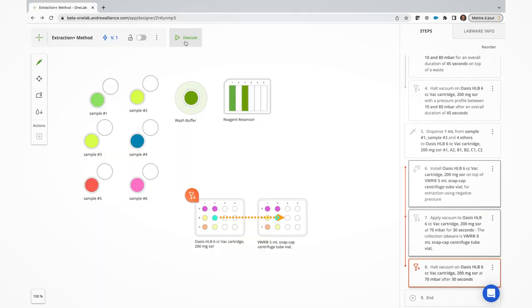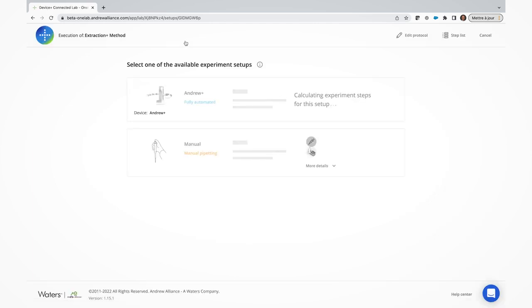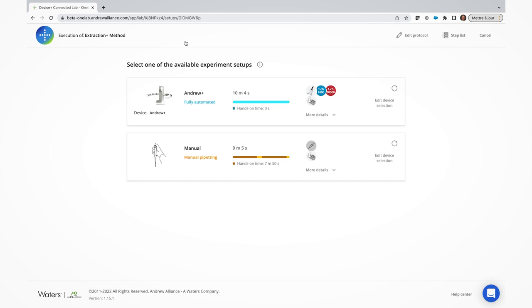Once your protocol is built, click on Execute and OneLab will calculate the best configuration for your method based on the available devices and pipettes, all whilst existing different execution options.